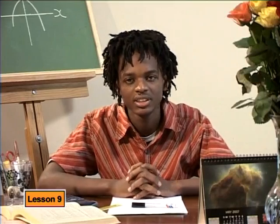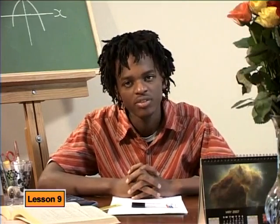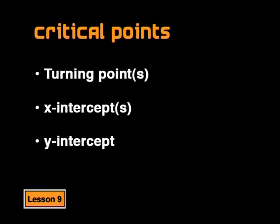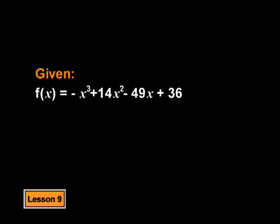MacGyver, do you think you can find the turning points for us? Well, in the previous lessons we used the derivative of the function when we were looking at the turning points, so I think that is what we should do here. Alright, why don't you do that then? Let me write down the function whose graph we are trying to draw: f of x equals negative x cubed plus 14x squared minus 49x plus 36.